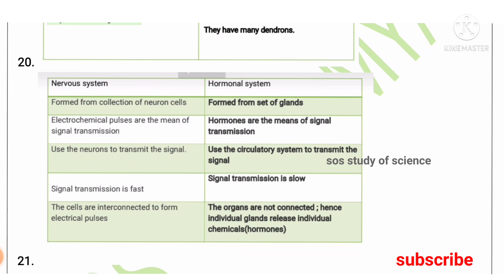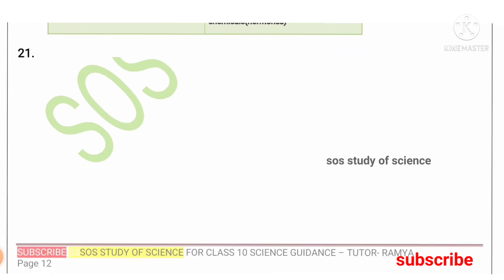The difference between the nervous system and the hormonal system: the nervous system is comprised of neurons; the hormonal system is comprised of endocrine glands. In the nervous system, electrochemical impulses are the means of signal transmission; in the hormonal system, hormones are the means. The nervous system uses neurons to transmit signals; the hormonal system uses the circulatory system. Signal transmission is fast in the nervous system and slow in the hormonal system. In the nervous system, cells are interconnected to form electrical impulses; in the hormonal system, organs are not directly connected.